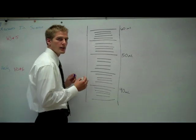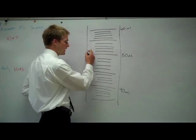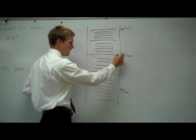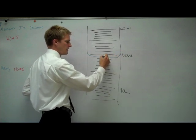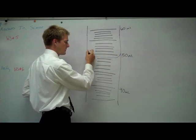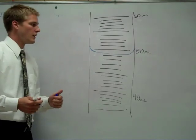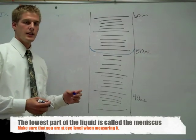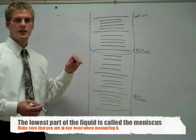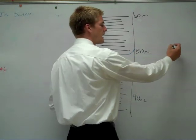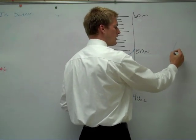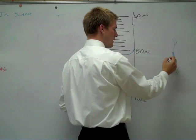Now, if we were to read what line this level was at, we need to make sure that we use the lowest part. So when you read the liquid, you want to read it to the lowest point, which is called the meniscus. You want to make sure that your eye is at the level of the meniscus.